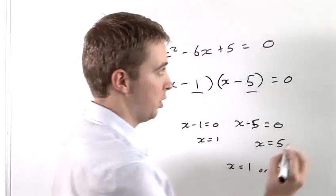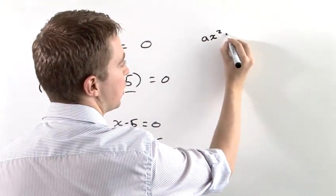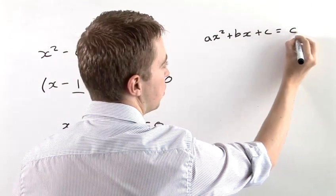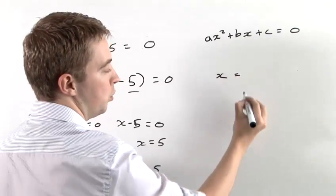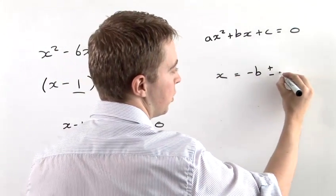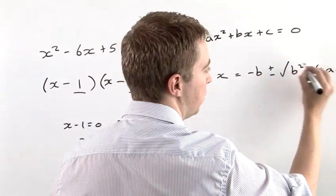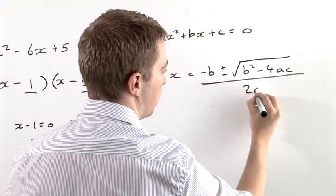That formula is, when we have the quadratic which is ax squared plus bx plus c equals 0, the results are equal to negative b plus or minus the square root of b squared minus 4ac, all divided by 2a.